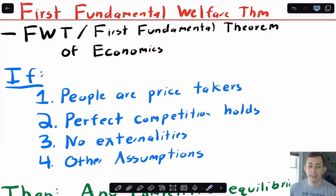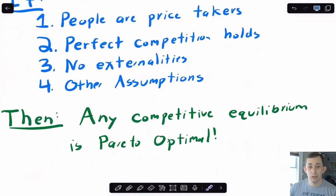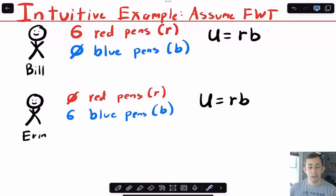The explicit economic concept here is the First Fundamental Welfare Theorem, or FWT. Basically, what the FWT says is that people are price takers, you're in a perfectly competitive market, there are no externalities — those are the three big assumptions. If those assumptions hold, then any competitive equilibrium is going to be Pareto optimal. You may have seen this with supply and demand; here we're showing it with an Edgeworth box.